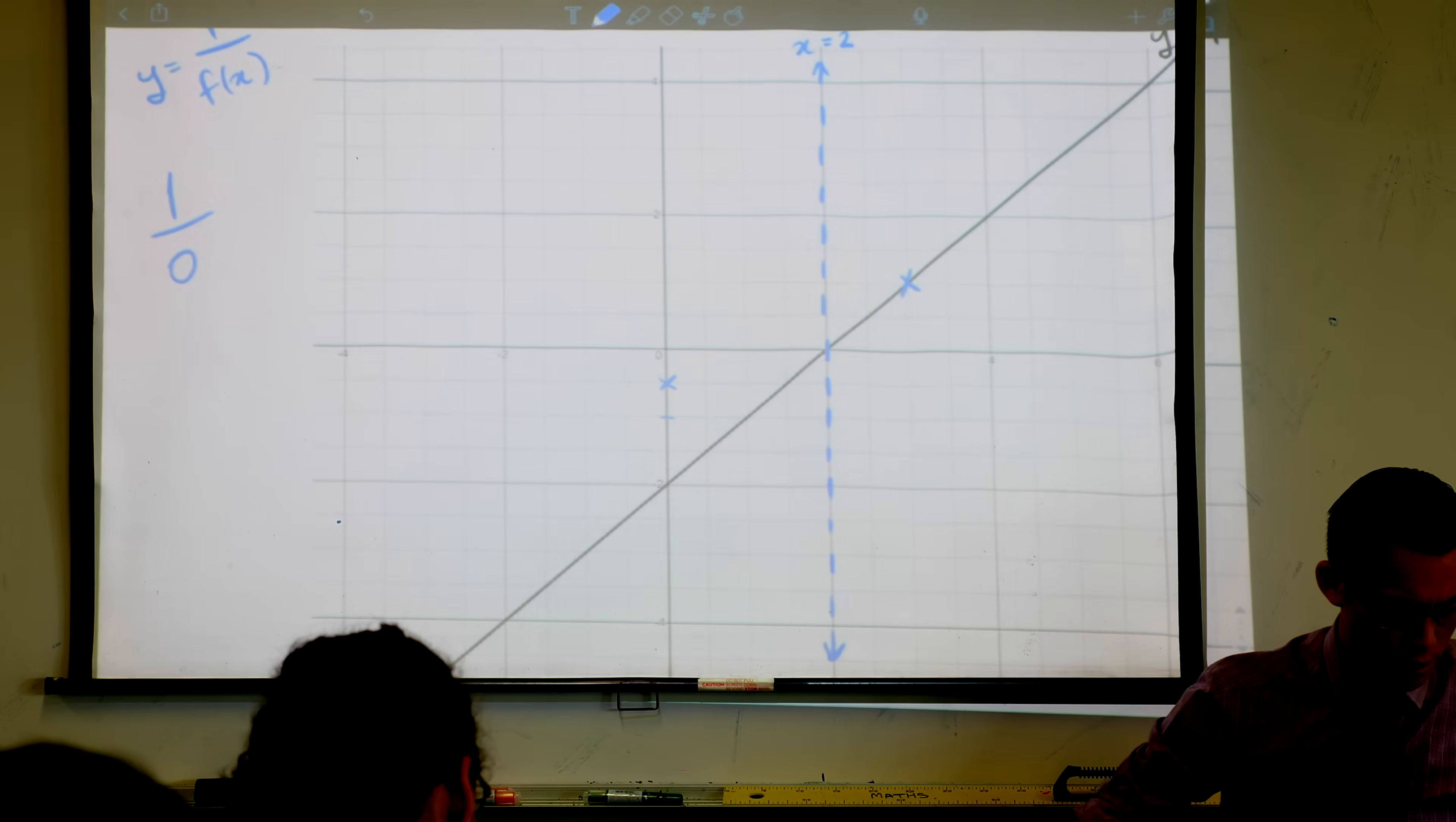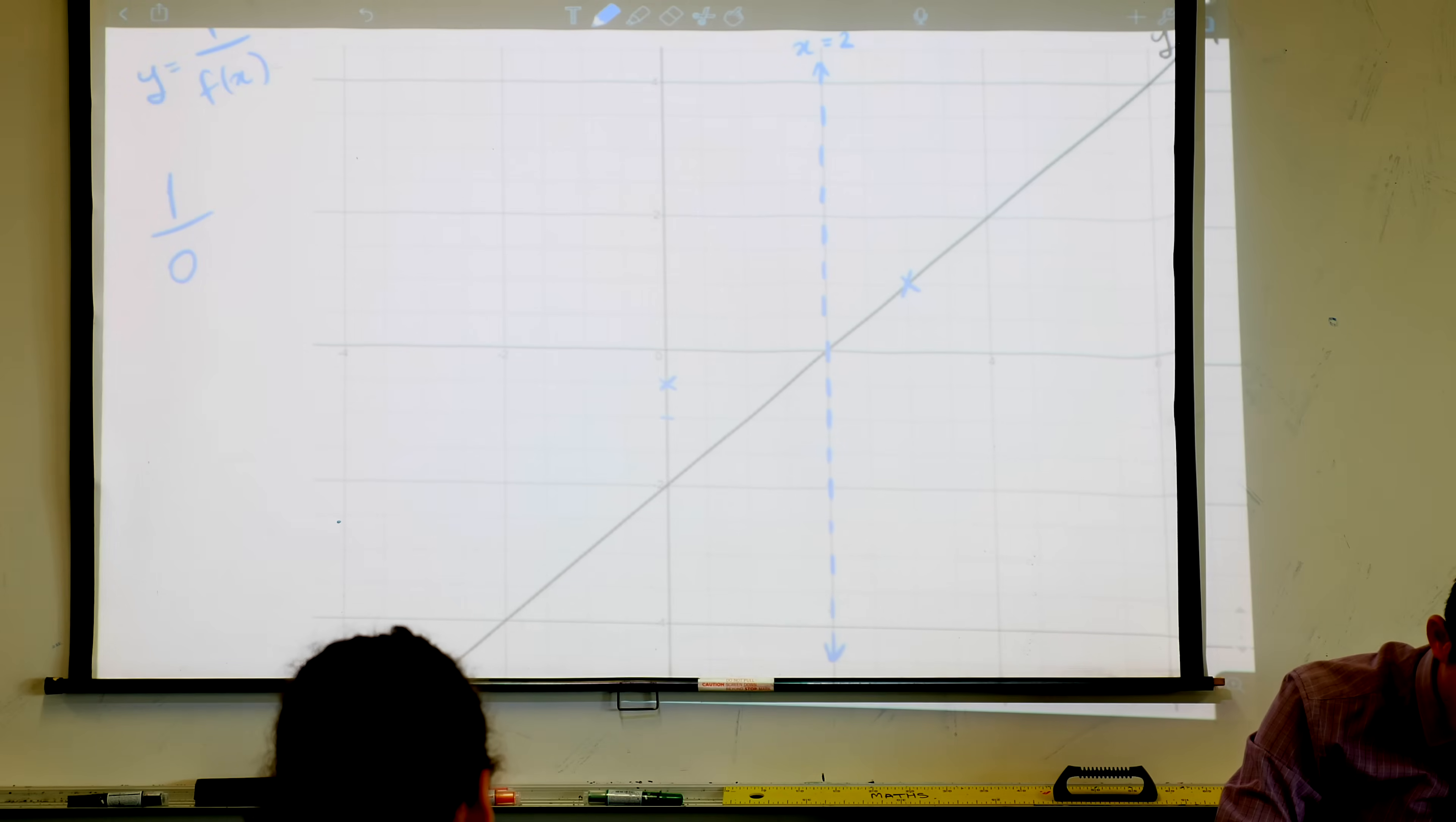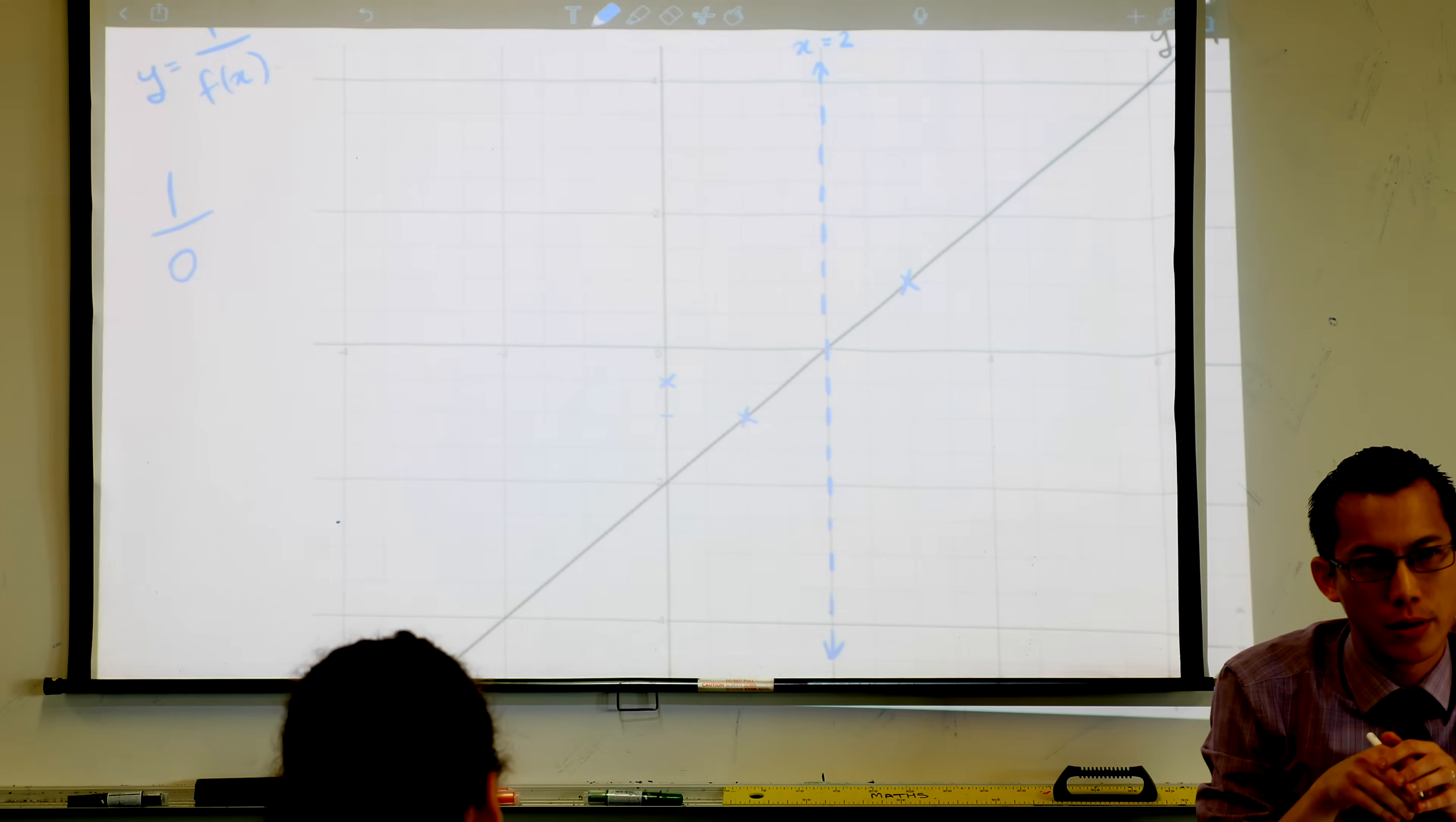One last important point, and then we'll start thinking about overall shape. You know, negative 1, where's negative 1? It's right there. Do you see that? Negative 1? What's the reciprocal of negative 1? It's also negative 1, so the reciprocal goes right through there. So what I've got is some important points. The reciprocal function is going to go through these x's that I've drawn here, and it's going to avoid that asymptote.